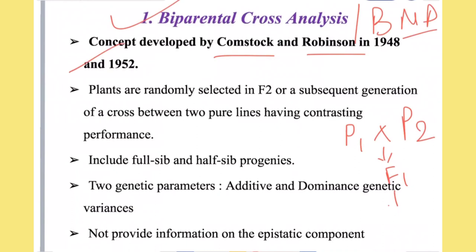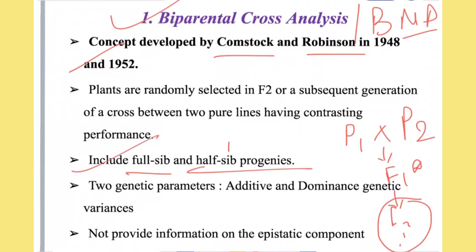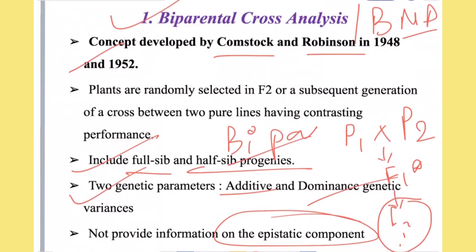The selection of plants is taken from F2 or subsequent generations. This analysis includes full-sib and half-sib progenies, which is why we call it bi-parental — both types of parents are involved. Bi-parental cross analysis gives information about two genetic parameters: additive and dominance. It does not provide any information about epistatic components such as additive-additive, additive-dominance, or dominance-dominance genetic parameters.